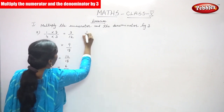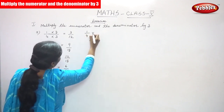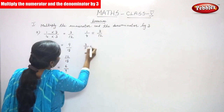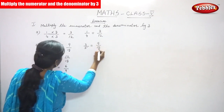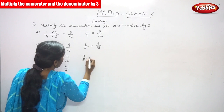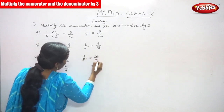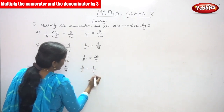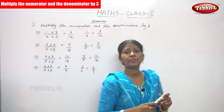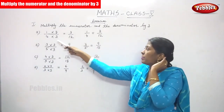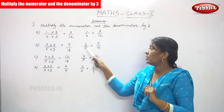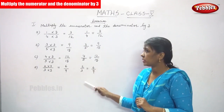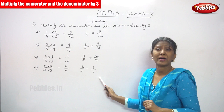Look at this. So, 1 by 4 is equal to 3 by 12. Here, 3 by 5 is equal to 9 by 15. Here, 4 by 5 is equal to 12 by 15. Here, 2 by 3 is equal to 6 by 9.